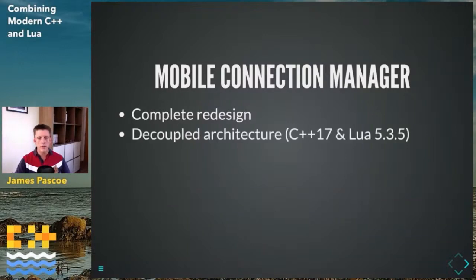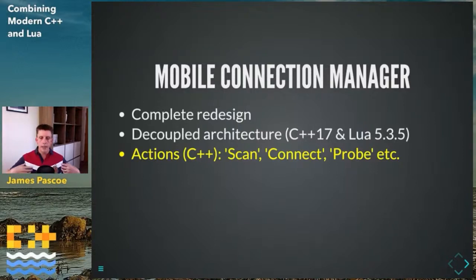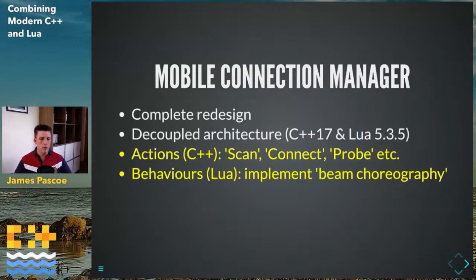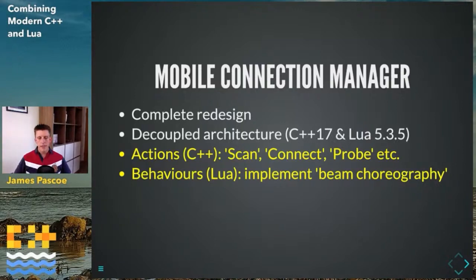Like all good software engineers, we did a complete redesign — this time going for a decoupled architecture using C++17 and Lua 5.3.5. There are two key abstractions: actions are implemented in C++ — things like scan, connect, probe, GPS, InfluxDB, SNMP — designed to be modular capabilities separate from the rest of the architecture. The actual behavior of the software — all the decision-making about when to make connections — is implemented in Lua, implementing what Blue Wireless calls 'beam choreography': the sequence of connections and disconnections as you proceed along the track.